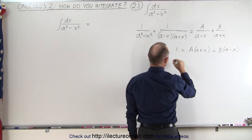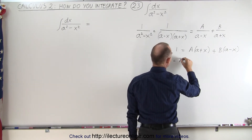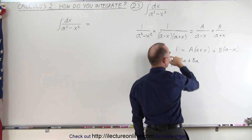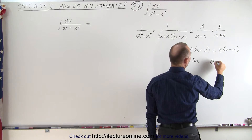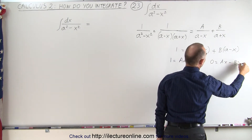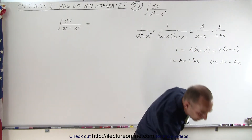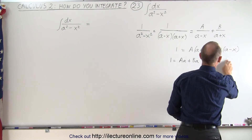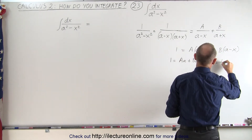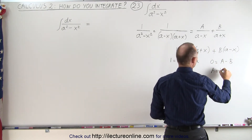On the left side, the constant 1 equals Aa plus Ba. And since there is no x term on the left side, we can say that 0 equals Ax minus Bx, which means A minus B equals zero, and therefore A is equal to B.